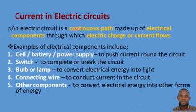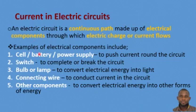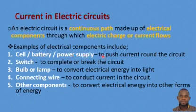Whenever there is a continuous path, current flows. In an electric circuit, we have electrical components. Examples of electrical components are the cell, battery or power supply. The function of a cell is to push current around the circuit, or to push electric charge around the circuit.